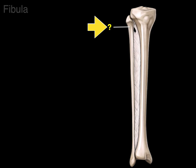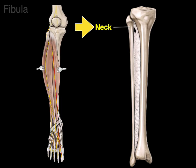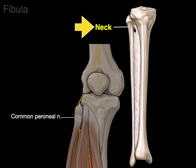Below the head is the neck — this is the neck of the fibula. If we zoom in, we can see the common peroneal nerve wrapping around the neck of the fibula. So if there is a fibular neck fracture, the common peroneal nerve is a nerve that may be injured.